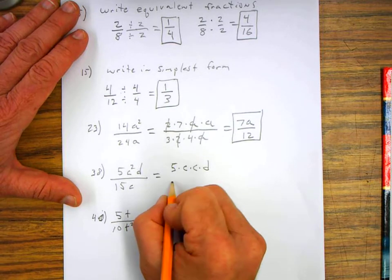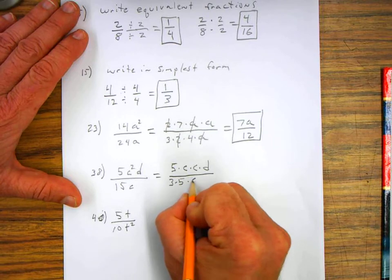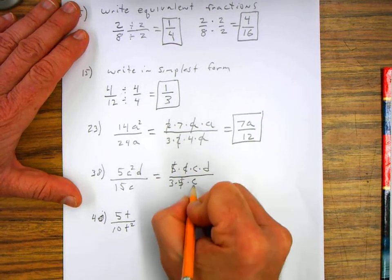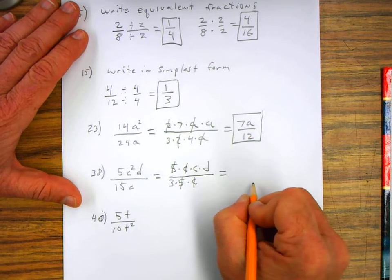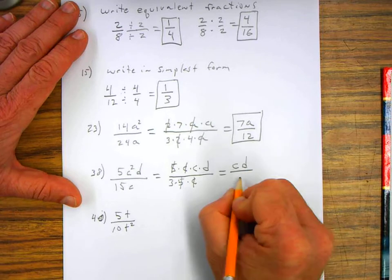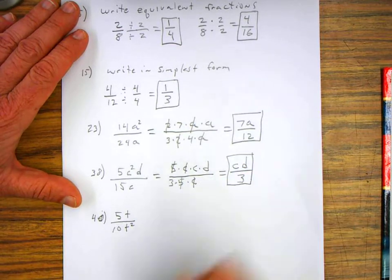Fifteen, I can write three times five is fifteen times c. The fives can cancel out, the c's can cancel out, and I'm left over with c times d all over three. And that's in its simplest form.